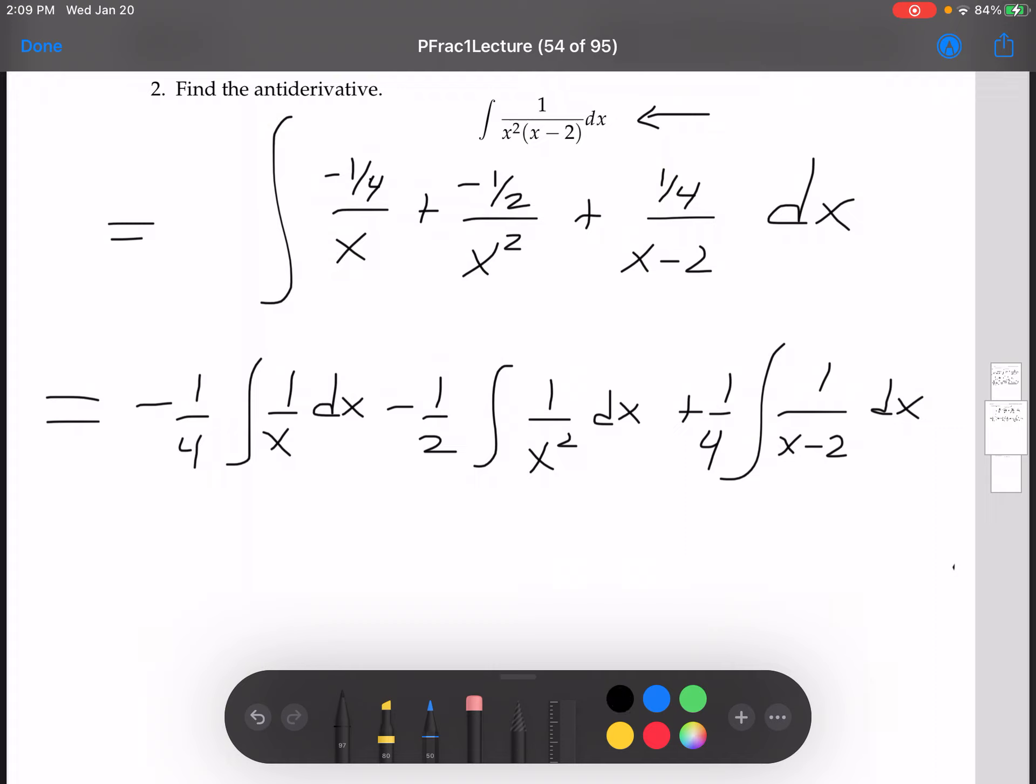Now to set up, to use the power rule, I'm going to rewrite this 1 over x squared as x to the negative 2. We have, so for this first one here, we've got negative 1 fourth, it just sits out front, ln absolute value of x, minus 1 half. Let's see, x to the negative 2, remember we add 1, divide by that amount, so negative 2 plus 1 is negative 1. So this is going to be x to the negative 1 over negative 1.